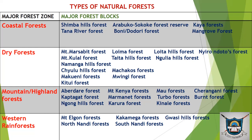Then we have the dry forests, which include the Mount Marsabit forest, the Mount Kulal forest, the Namanga Hills forest, the Chyulu Hills forest, the Makueni forest, the Kitui forest, the Loima forest, the Taita Hills, the Machakos forest, the Mwingi forest, the Nyiro Dotos forest, the Nguruman Hills forest, and others. Those are examples of the dry forests.